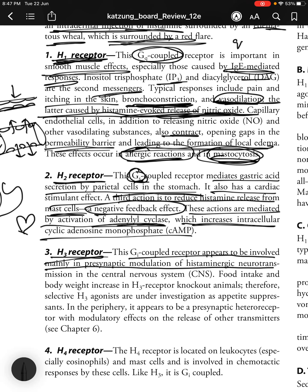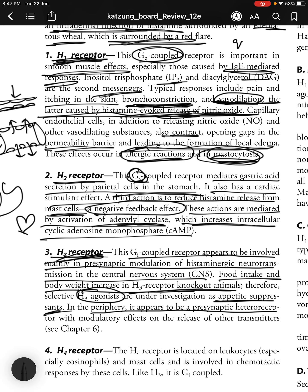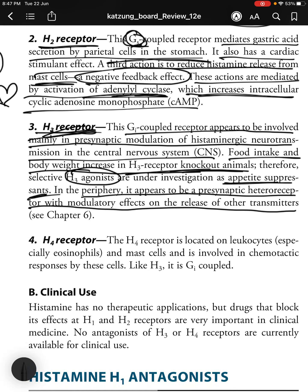H3 receptors are Gi-coupled and appear to be involved mainly in presynaptic modulation of histaminergic neurotransmission in the CNS. Food intake and body weight increase in H3 receptor knockout animals; therefore, selective H3 antagonists are under investigation as appetite suppressants. In the periphery, H3 appears to be a presynaptic heteroreceptor with modulatory effects on release of other transmitters. H4 receptors are located on leukocytes and mast cells, involved in chemotactic responses by these cells, and are also Gi-coupled.